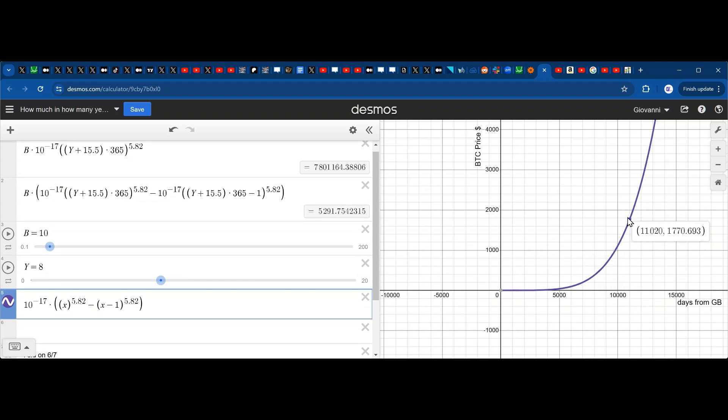It does the same thing. The x-axis represents the number of days from the Genesis block. The first number is the x-axis and the other one is how many dollars you do per day. This is what this equation represents.